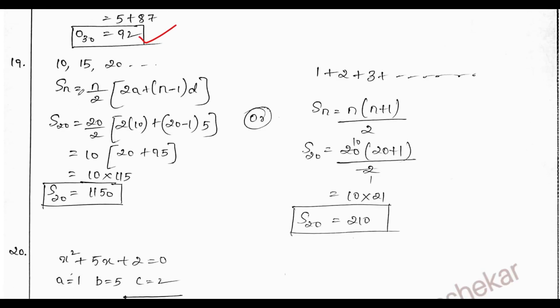And the sum of 20 terms of the AP 10, 15, 20 is 1150. And also, students, there was a question, the sum of 20 terms is what?